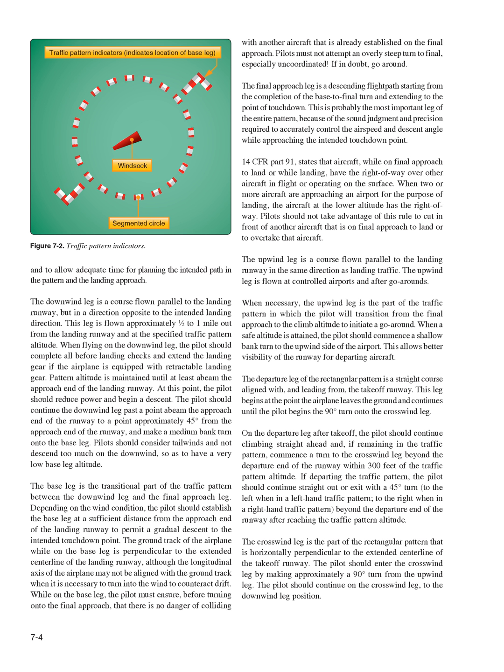While on the base leg, the pilot must ensure, before turning onto the final approach, that there is no danger of colliding with another aircraft that is already established on the final approach. Pilots must not attempt an overly steep turn to final, especially uncoordinated. If in doubt, go around. The final approach leg is a descending flight path starting from the completion of the base-to-final turn and extending to the point of touchdown. This is probably the most important leg of the entire pattern, because of the sound judgment and precision required to accurately control the airspeed and descent angle while approaching the intended touchdown point.